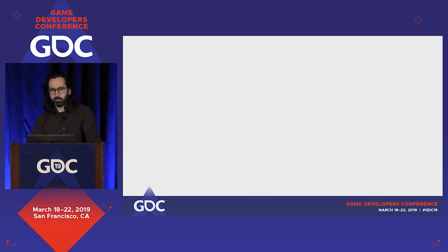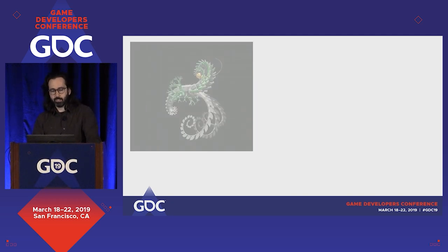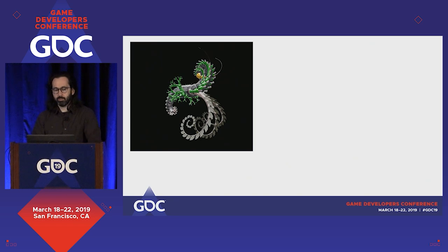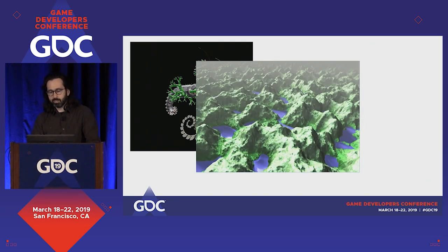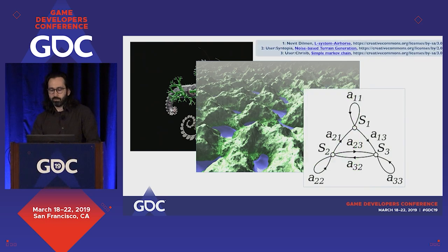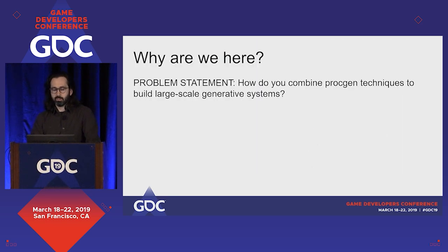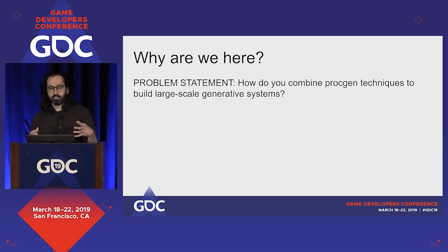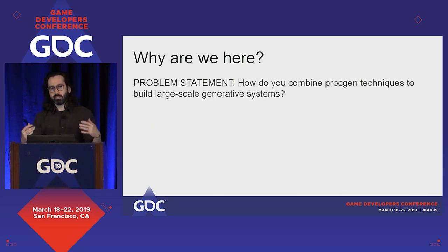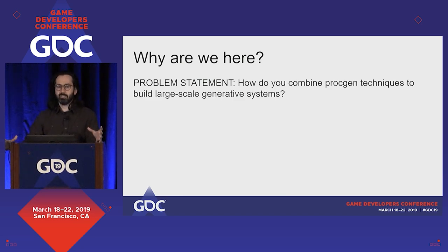Let's say that you have some familiarity with procedural generation and various techniques. Maybe you've used L-systems to generate some plants, or noise maps to generate terrain, or a Markov chain to generate some text. But we have a problem statement: how do you combine procedural generation techniques to build large-scale generative systems? By large-scale, we mean any system that requires you to compose several of these techniques in some novel way — something you can't just look up a tutorial for.